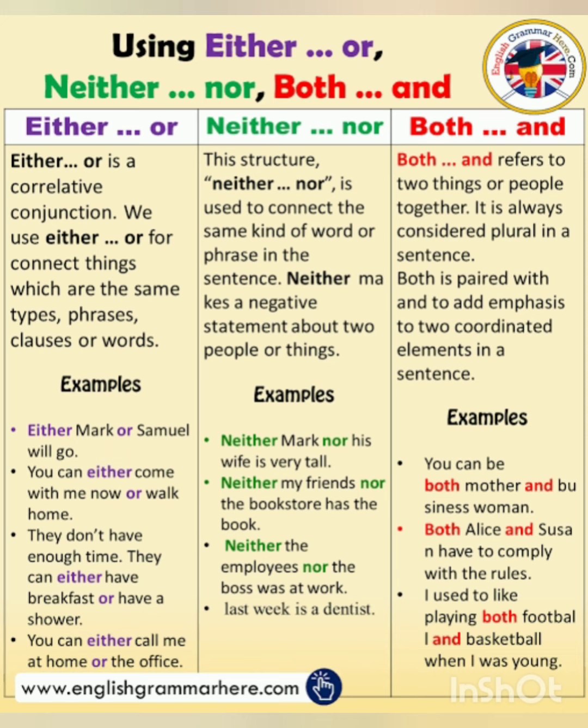We use 'either...or' for connecting things of the same type — phrases, clauses, or words. For example: you can either come with me now or walk home — there are two choices. We use 'neither...nor' when we want no option to be chosen. Example: neither the employees nor the boss was at work — meaning none of them was at work.